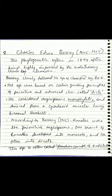Hello students, today we will discuss the system of classification of angiosperms given by Charles Edwin Bessey (1845 to 1915). It is a phylogenetic system given by Bessey in 1884, after being highly impressed by the evolutionary ideas of Charles Darwin. Bessey closely followed the system of classification given by Bentham and Hooker.